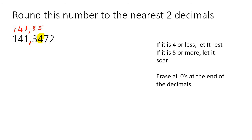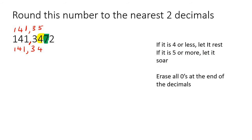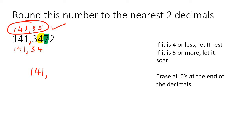Then we erase zeros at the end of the decimals. Now we look at the number on the right, like we've always done in previous rounding examples. If that number is 5 or more, let it soar — meaning let the 4 soar, which means it becomes bigger, flying upwards to become a 5. So the answer is 141,35.